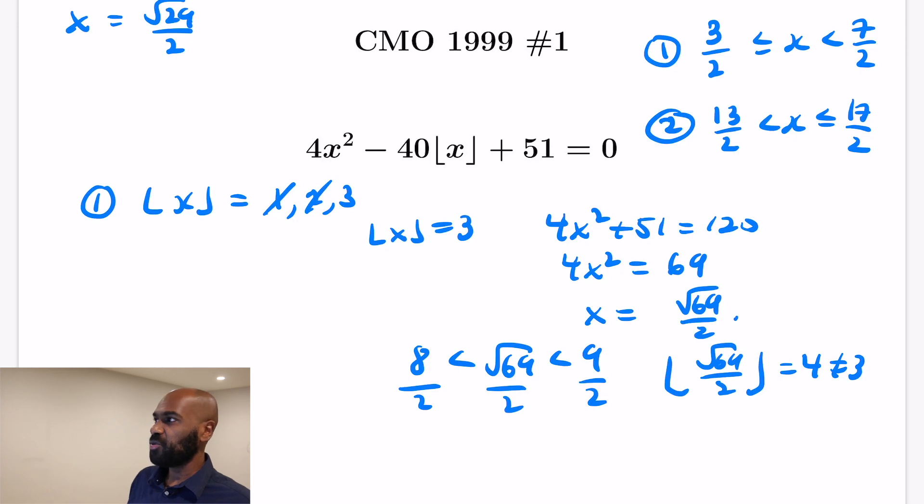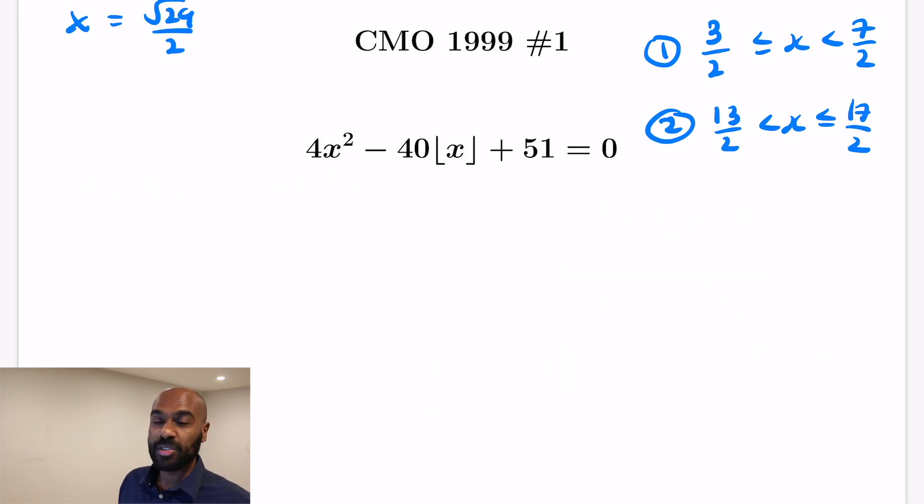So for the values of x between 3/2 and 7/2, we only have one solution. So now what remains is to check the values of x that are between 13/2 and 17/2 doing the same type of process we just did with setting floor of x to values. Now 13/2 is 6.5 and 17/2 is 8.5, so the possible values of floor of x here are 6, 7, and 8.